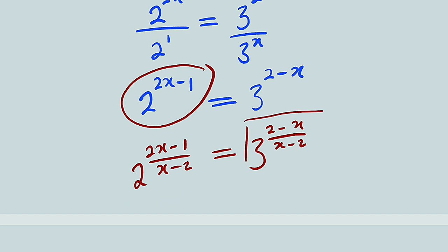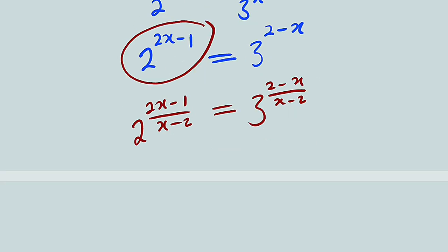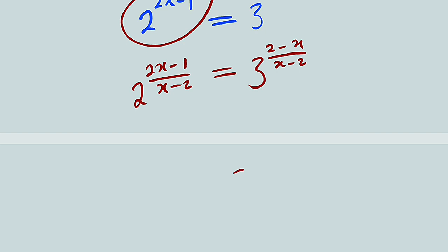So now let us simplify the right hand side to get our final answer. Observe the exponent here. We have 2 minus x, while this is x minus 2. We can transform 2 minus x into x minus 2 by multiplying the numerator by negative 1. So we have 3 to the power of negative (x-2) divided by (x-2). By doing so, you can see this will cancel this, leaving only negative 1.